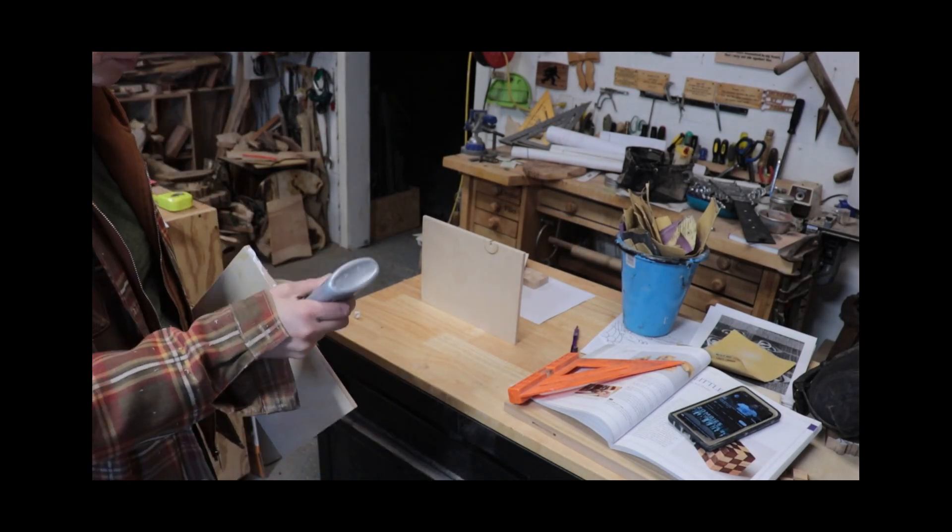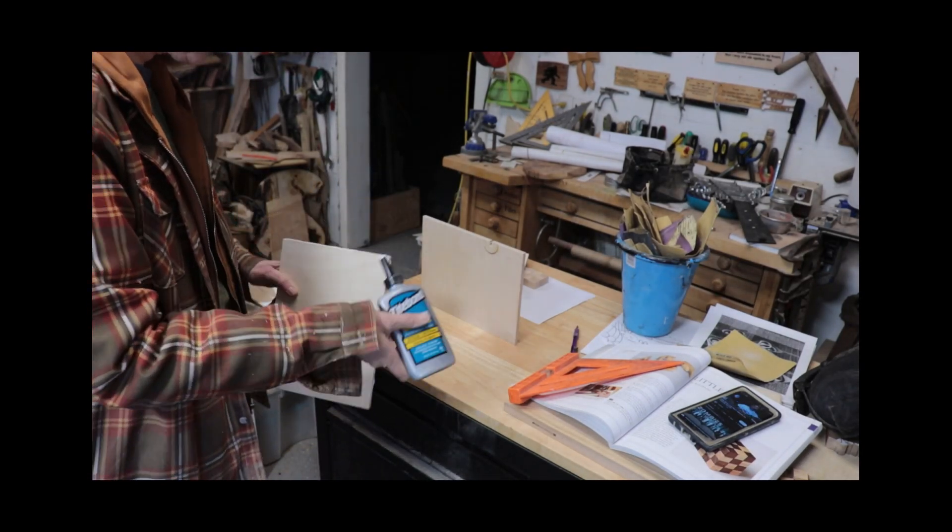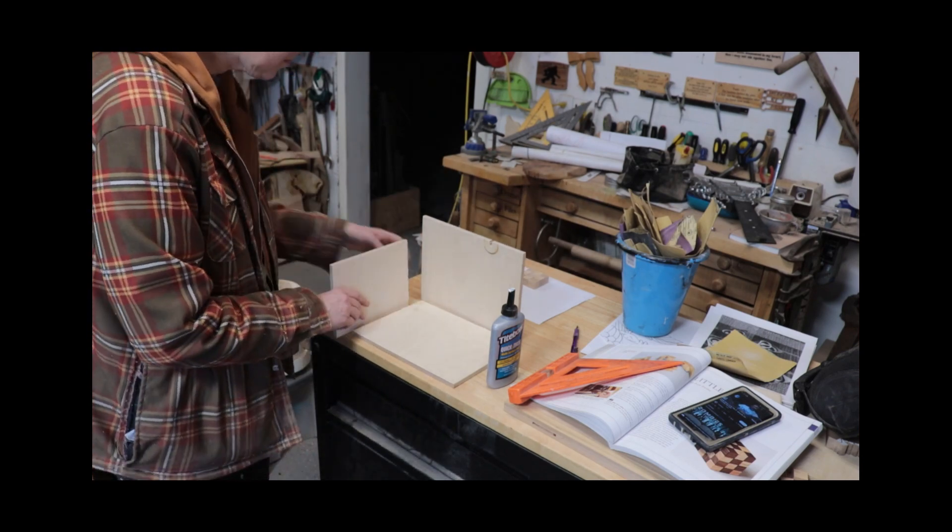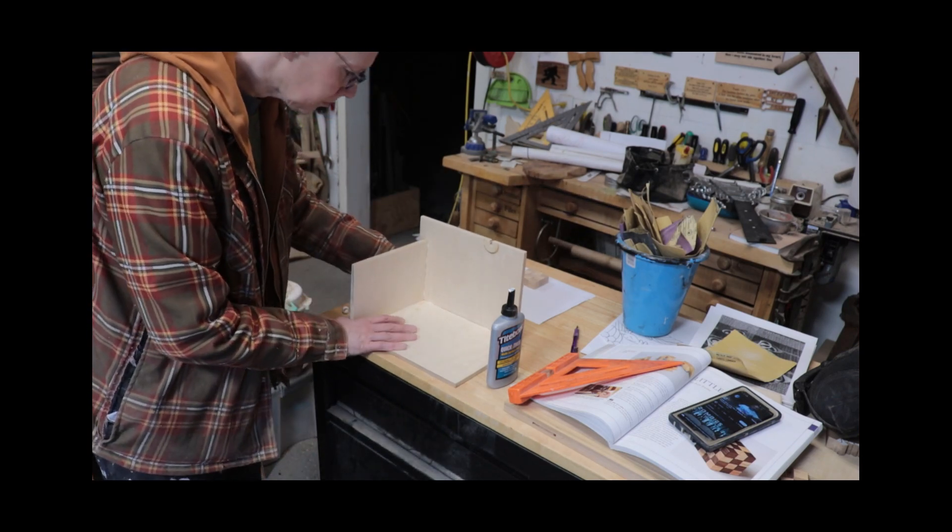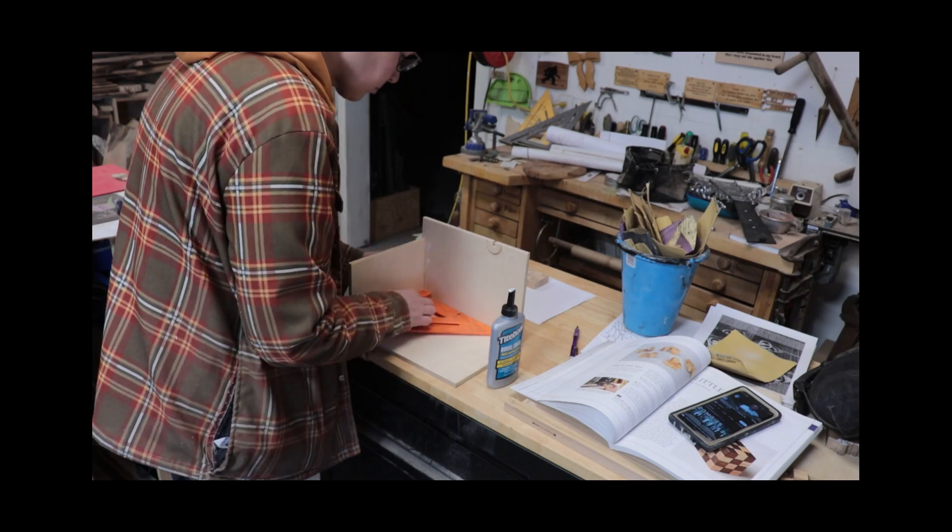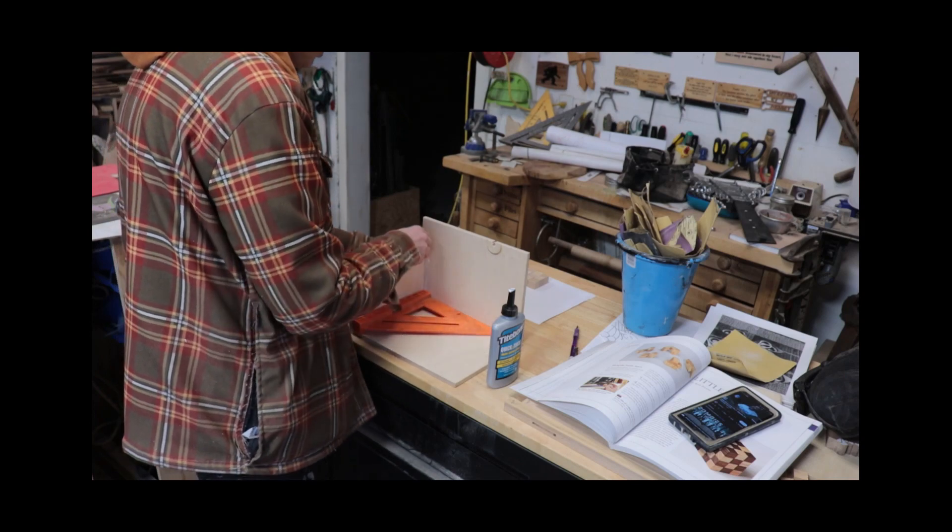The book has a bunch of jigs and shows how to make them. I plan to make all of those too. But for now, I only made this one, which is a simple box to keep all the pieces square. I glued up a few spare pieces of nice plywood that I had, using my speed square to make sure there was a 90 degree angle there.